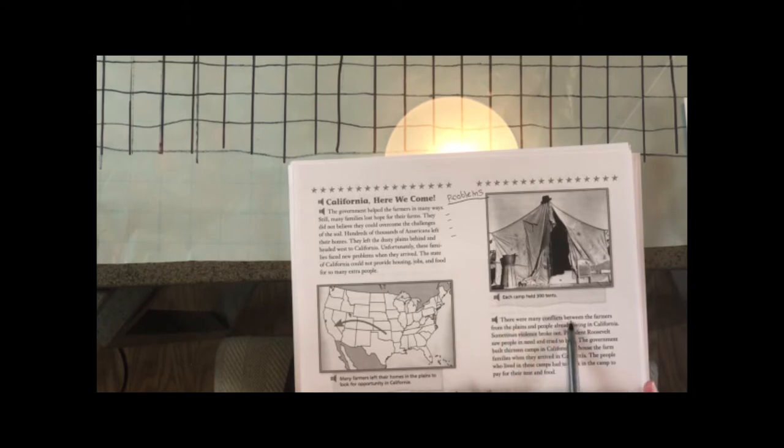There were many conflicts between the farmers from the plains and people already living in California. Sometimes violence broke out. President Roosevelt saw people in need and tried to help. The government built 13 camps in California to house the farm families when they arrived in California. The people who lived in these camps had to work in the camp to pay for their tent and food. So did this talk about any solutions yet? No, not really, it actually talks about some more problems, so you might add some of the things from this section to your list of problems on that page.